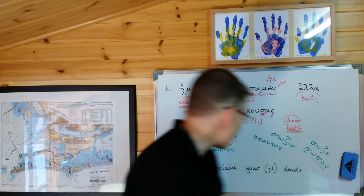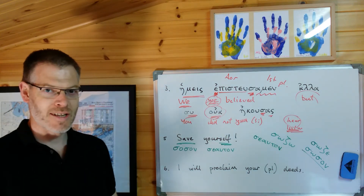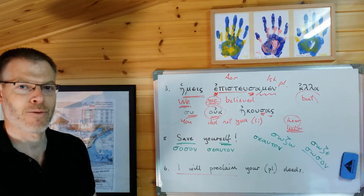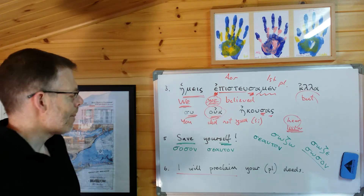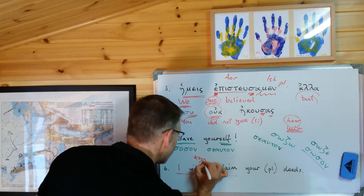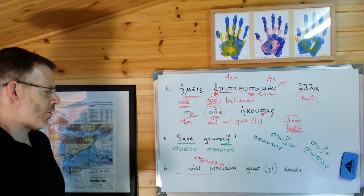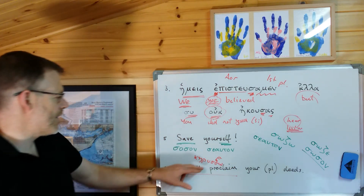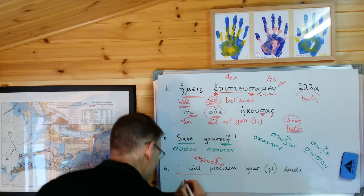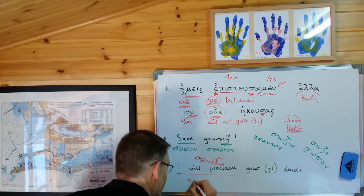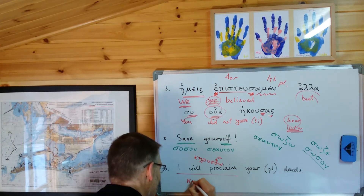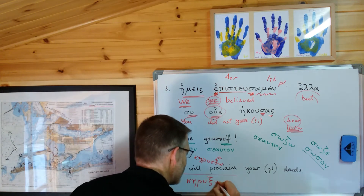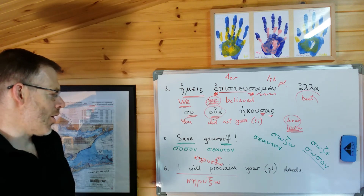Number six: I will proclaim your deeds. So proclaim — as distinct from 'preach the gospel,' which is euangelizomi — you want the verb keruso. And it's in the singular first person, but it's future. So you want the extra sigma suffix in there, which means that the double sigma you've got already turns into a psi. So I will proclaim is keruxo — future endings in the indicative are the same as in the present. So keruxo: I will proclaim.